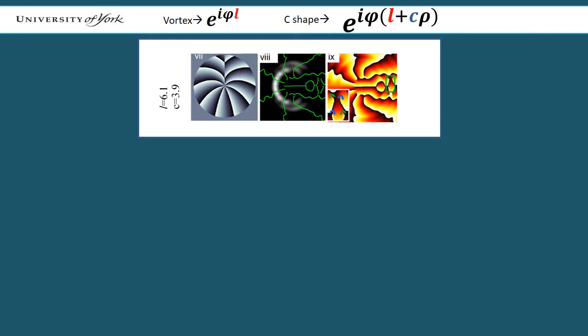This mask introduces a radial phase dependence, breaking the rotational symmetry of the Fourier plane intensity, as shown in the central image, whilst maintaining vortex characteristics in the Fourier plane phase shown in the rightmost image.